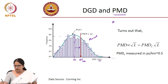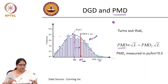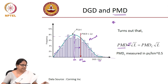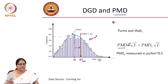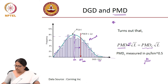When PMD is measured for different lengths of fiber, it turns out to be proportional to the square root of length, not linearly increasing. This is an empirical observation from field measurements at 1, 2, 3, and 100 kilometer spans. So we say PMD equals a PMD coefficient times root L, and it is measured in picoseconds per square root kilometer.